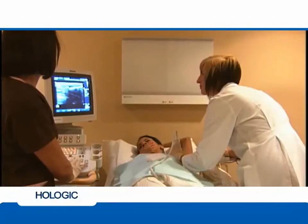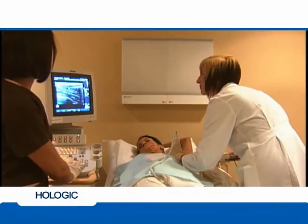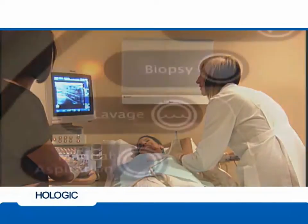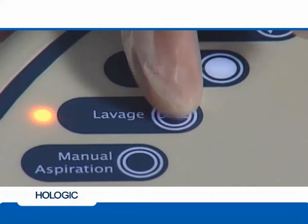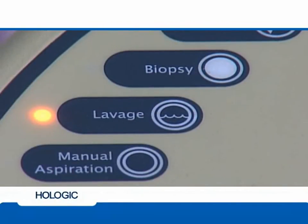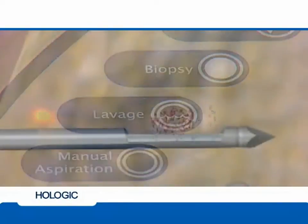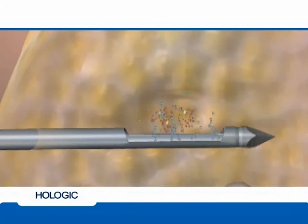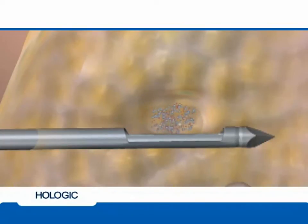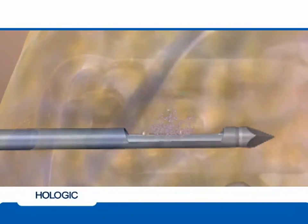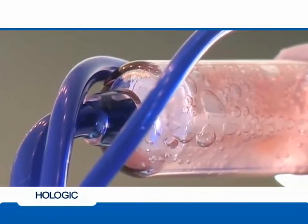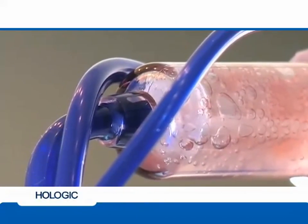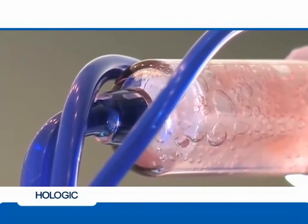When tissue acquisition is complete and with the needle still positioned in the breast, you may choose to switch the console to lavage mode by pushing the button marked lavage. Lavage mode continuously delivers saline to the biopsy site and aspirates the biopsy cavity, allowing loose tissue and other fluids to be cleansed from the site, clearing it for marker placement. Lavage the cavity until the fluid in the collection chamber indicates the cavity is clear.